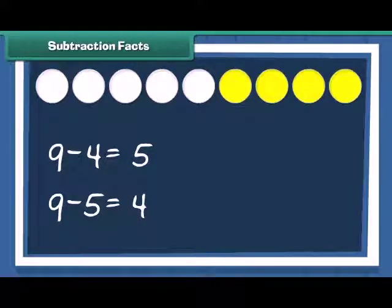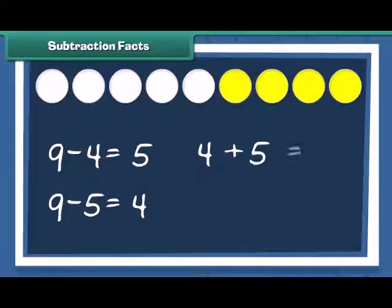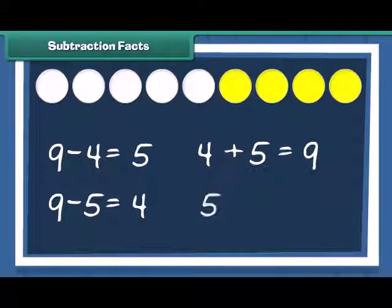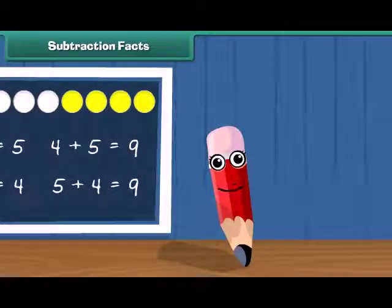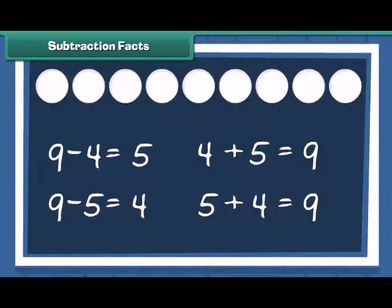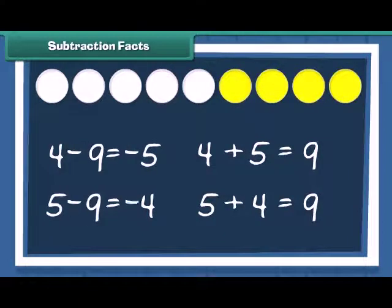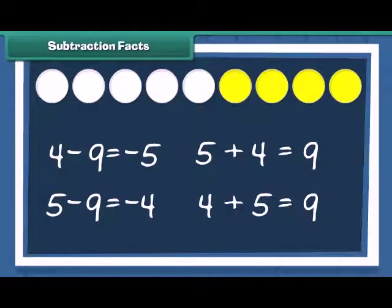Remember the addition fact we looked at a while ago? 4 plus 5 is equal to 9 and 5 plus 4 is equal to 9. Well, for every addition fact, there is a corresponding subtraction fact too. This shows that 3 numbers can be interchanged in addition or subtraction.